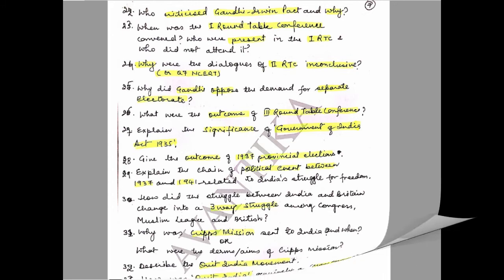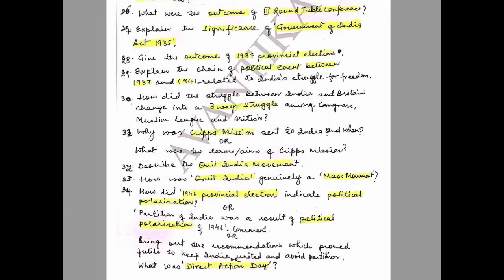Question 31: Why was the Cripps Mission sent to India and when? What were the terms and aims of the Cripps Mission? Question 32: Describe the Quit India Movement. Question 33: How was Quit India genuinely a mass movement? Question 34: How did the 1946 provincial elections indicate political polarization?